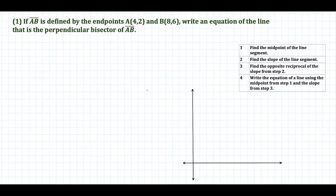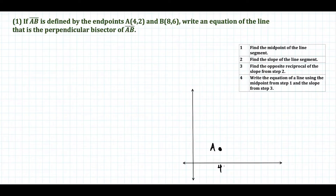For this first example, we have points A and B. A is at (4, 2), so let's plot this — going right 4 and up 2. And point B is at (8, 6), so we go over 4 more to 8, and up 6. So here's B.